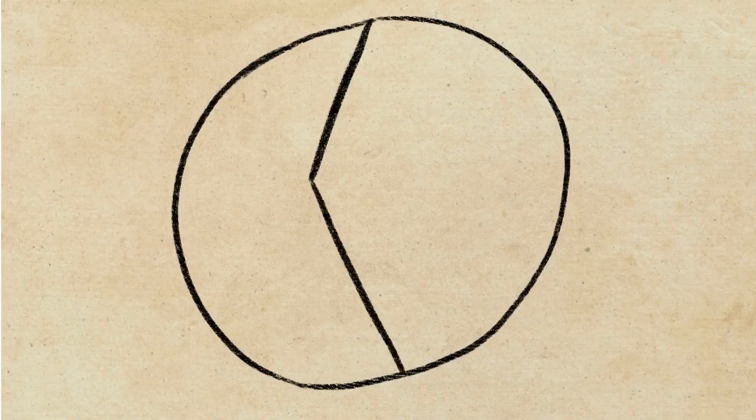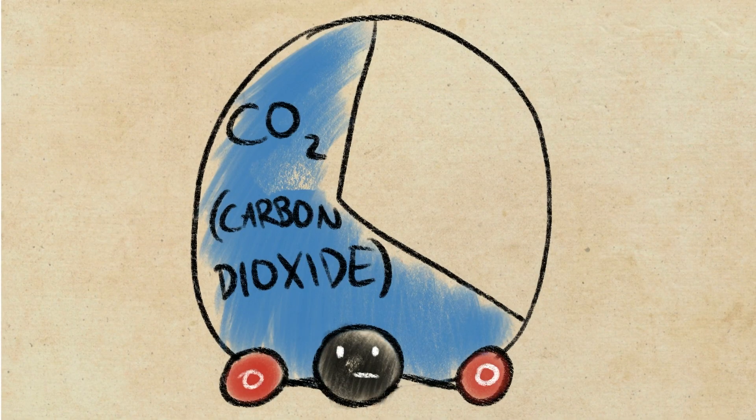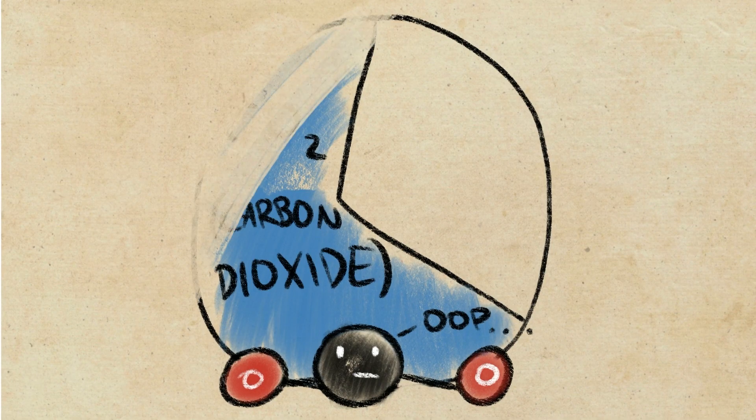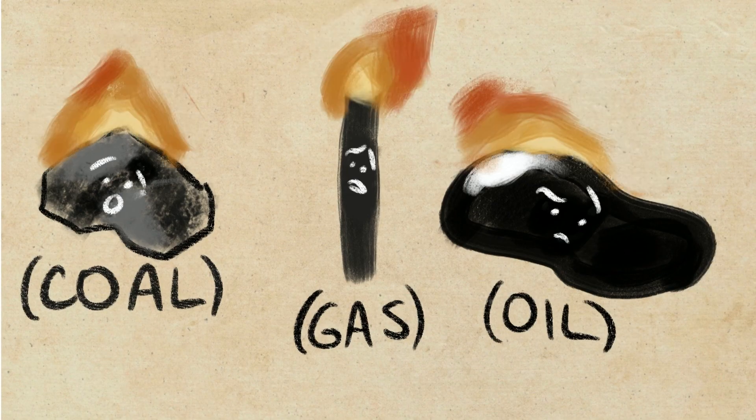First, carbon dioxide. It's the greenhouse gas with the biggest total impact on climate change. Most of the CO2 in the atmosphere has come from burning fossil fuels, so coal, gas, and oil.